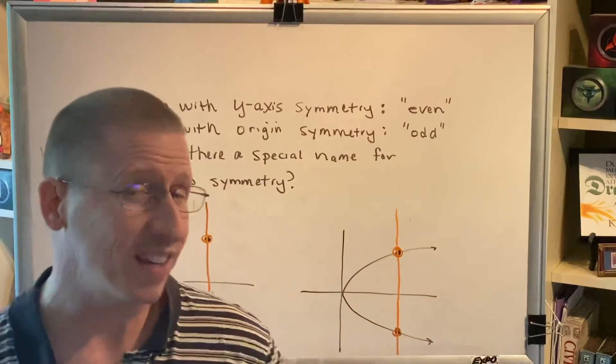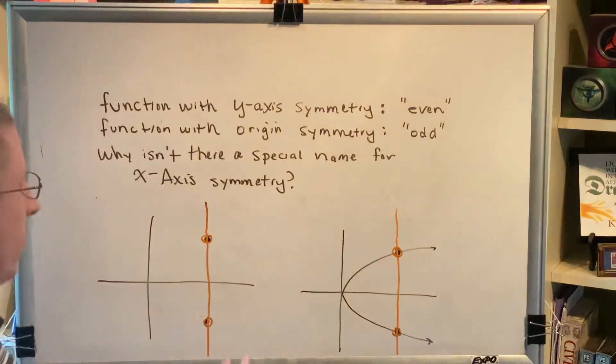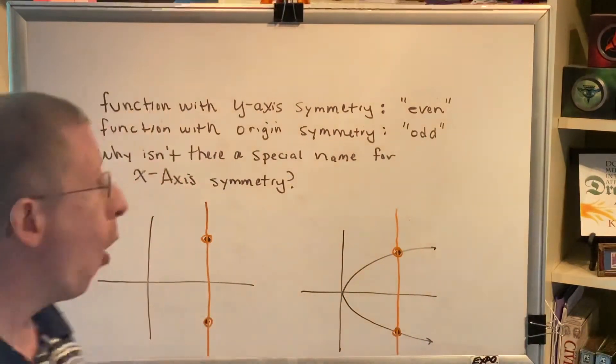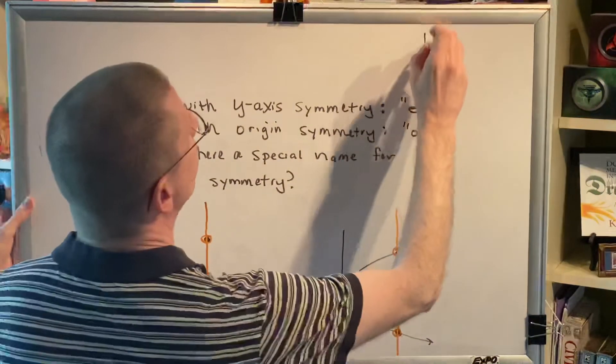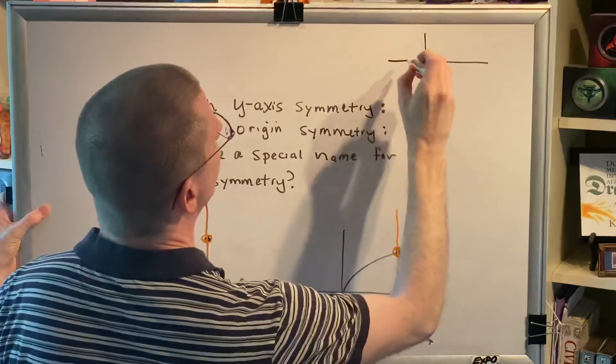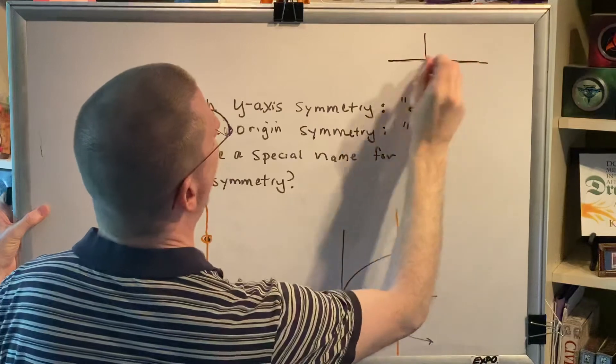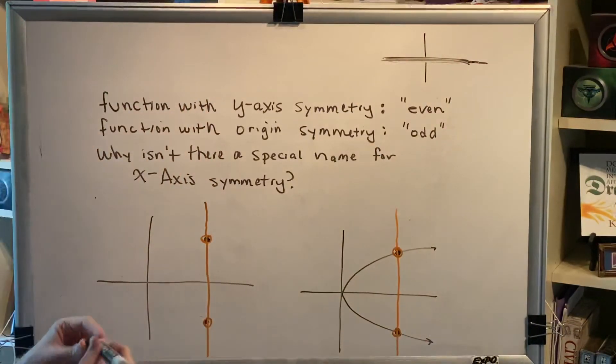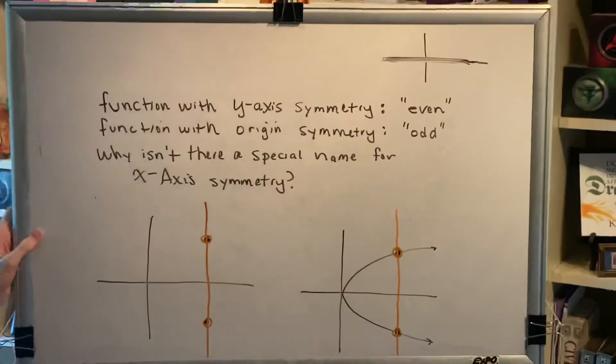There is actually one exception to that rule, but it is not the kind of thing that we would study in this class. That would be the only function which is both even and odd at the same time, and that would be the x-axis. The equation of the x-axis itself is a function that is both even and odd at the same time.